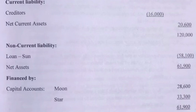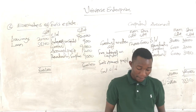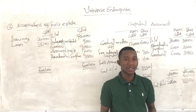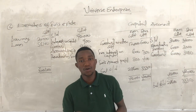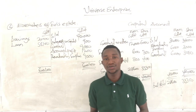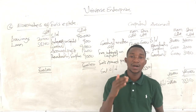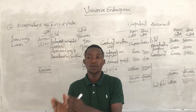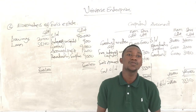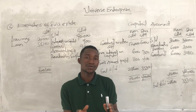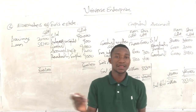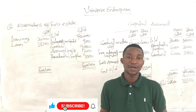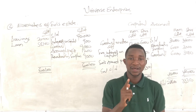The net asset of $61,900 is financed by Moon's capital of $28,600 and Star's capital of $33,300, totalling $61,900 — balancing perfectly. That is how we make an accounting arrangement for the retirement, death or withdrawal of a partner. If you don't understand anything, leave a comment below. Our next topic will be amalgamation of partnership firms — where two partnership businesses come together to form one. Subscribe to the channel so you get notifications when new videos are uploaded. Bye for now.